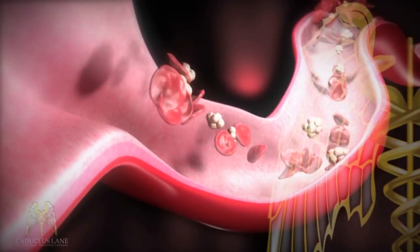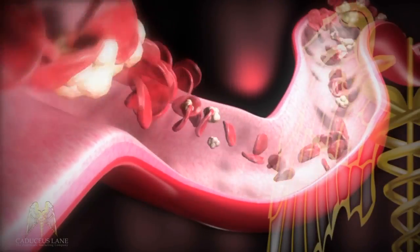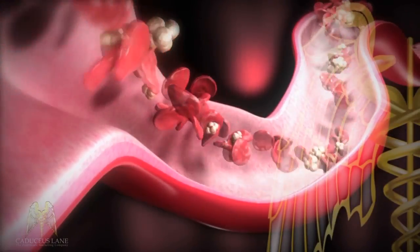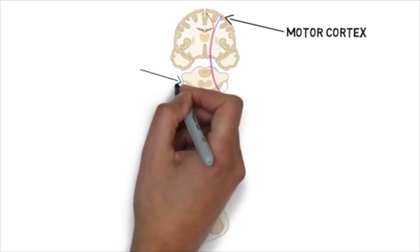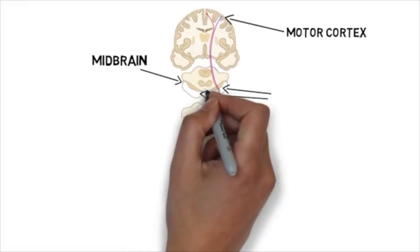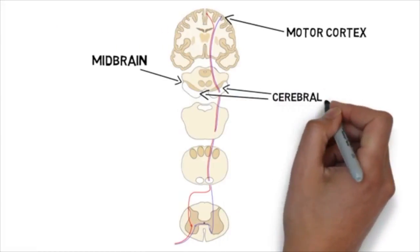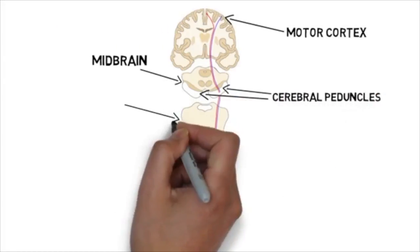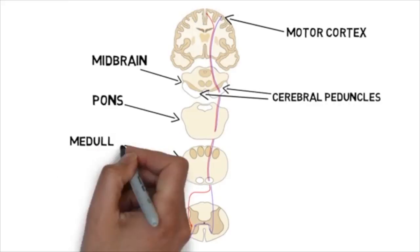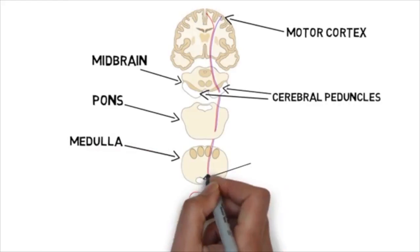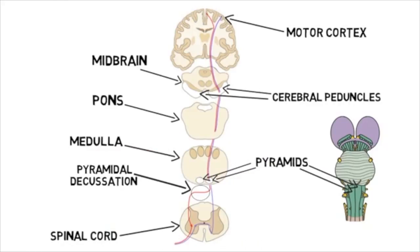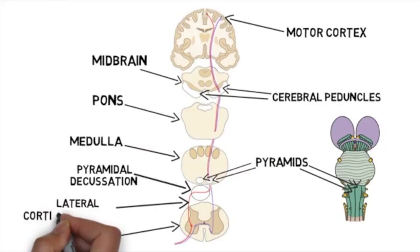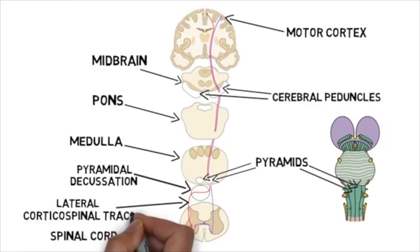Let's say a stroke happens on the right side of the brain in the primary motor cortex, located in the precentral gyrus. This bundle of cells is known as the internal capsule. The axons continue to the medulla where they cross to the left side of the body, then travel down the lateral corticospinal tract.